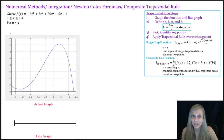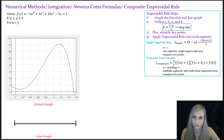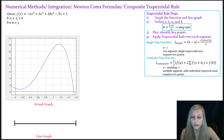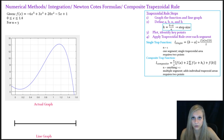Hey guys, in this video I'll be going over the composite trapezoidal rule. The idea behind the trapezoidal rule for an integration method is to estimate the function as a first order polynomial, and then estimate the integral as the area underneath that first order polynomial. For the composite trapezoidal rule, we're going to sum together several applications of the single trapezoidal rule.